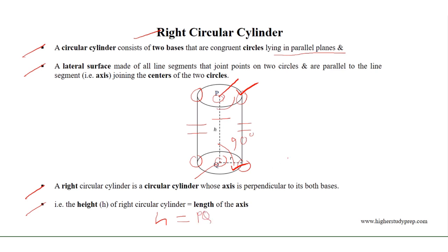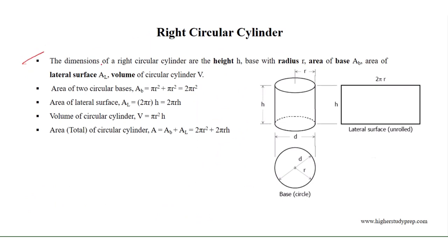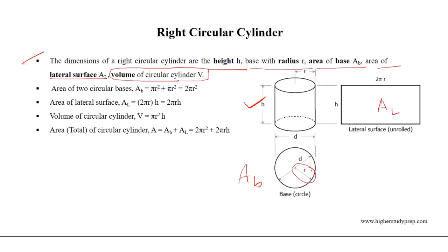The height of the right circular cylinder is equal to the length of the axis. The dimensions of a right circular cylinder are height H and base radius R. The area of the base A_B is pi r squared. Since a right circular cylinder has two circular bases, the area of the two circular bases equals pi r squared plus pi r squared, which is 2 pi r squared.